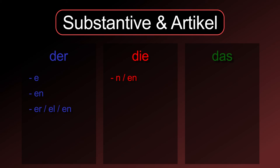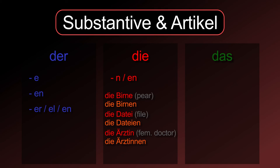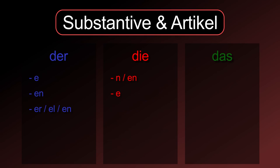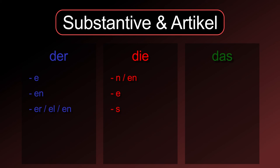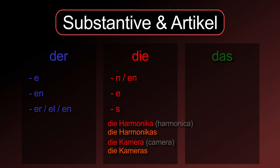The plural suffix for feminine nouns is almost always -n or -en: die Birnen, die Dateien, die Ärztinnen. If the singular noun has the suffix -in, then the plural has to be written with two Ns. Some words will get the suffix -e: die Wende, die Städte. Words that end on -a will get the suffix -s: die Harmonikas, die Kameras.